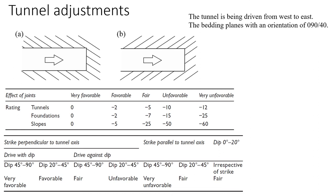The rock mass rating is the sum of all the ratings we've just obtained: 7 plus 13 plus 8 plus 20 plus 4. There is just a little bit more left, which is the adjustment for the tunnel orientation.